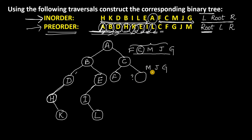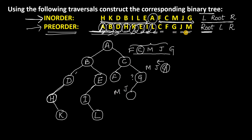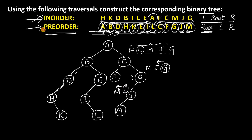Among M, J, and G, check which comes first in the preorder. G is coming first, so write G here as the root of this subtree. To the left of G we have M and J. Among these two, J comes first in the preorder, so J is the root. M goes to the left of J. With that, all nodes are placed and the binary tree for this inorder and preorder is complete.